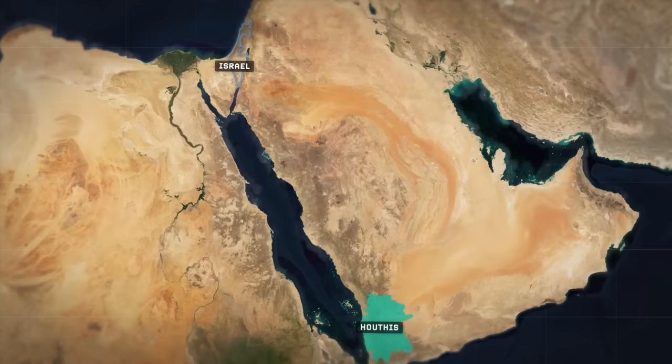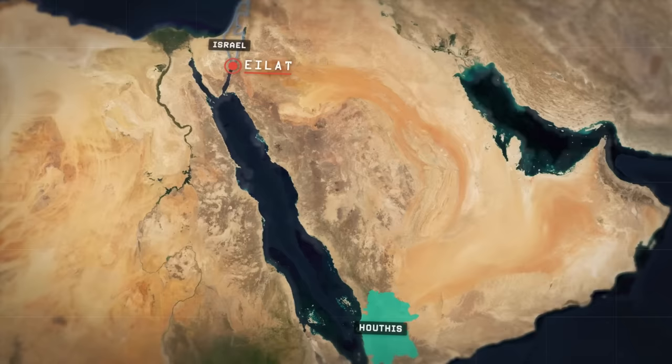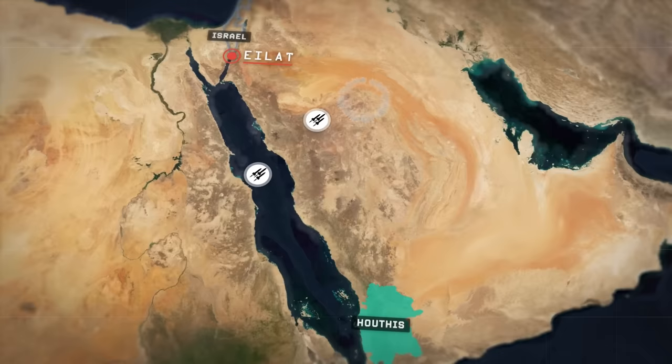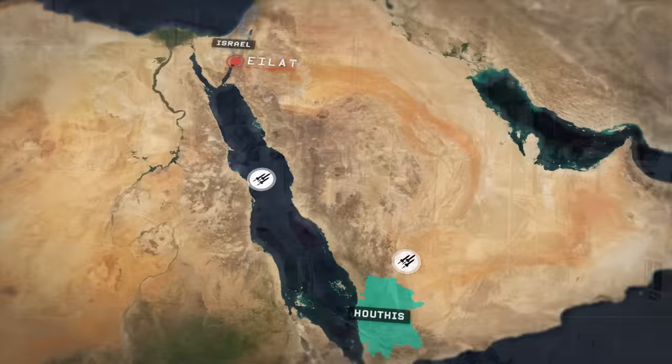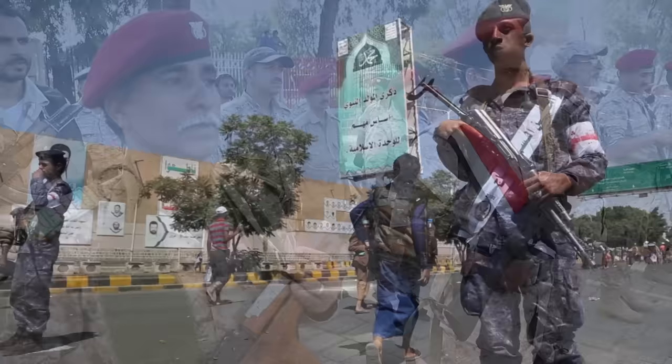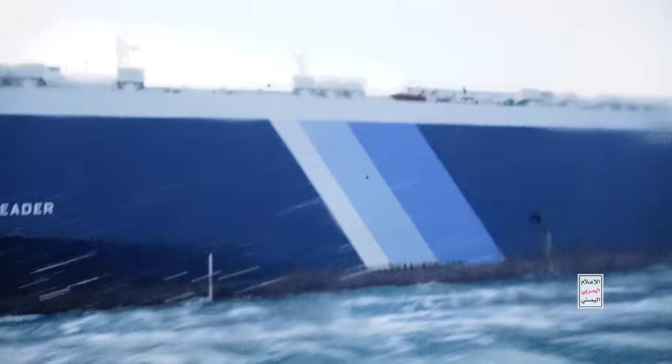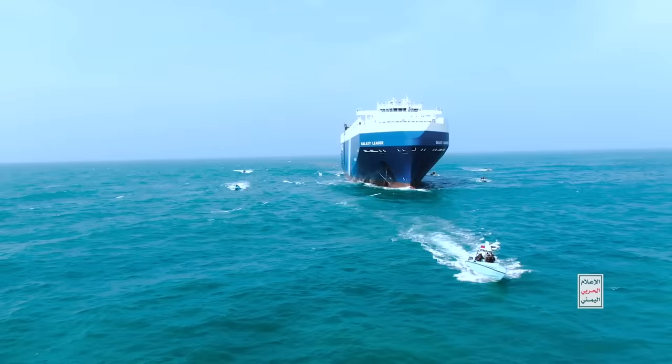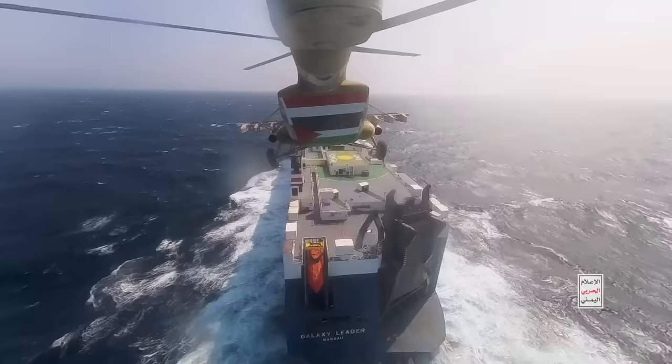So far, all of the missiles and drones that the Houthis have fired towards Eilat have been either intercepted by American or Israeli warships operating within the Red Sea, intercepted by Israeli or Saudi anti-air defenses, or have crashed off target without causing any casualties. But the Houthis are only likely to continue firing more the longer that the war in Gaza continues. On the 19th of November, a cargo ship called the Galaxy Leader, traveling through the Red Sea on its way to India, was spectacularly hijacked by a group of armed and well-trained Houthi militants who raided the ship with a helicopter.